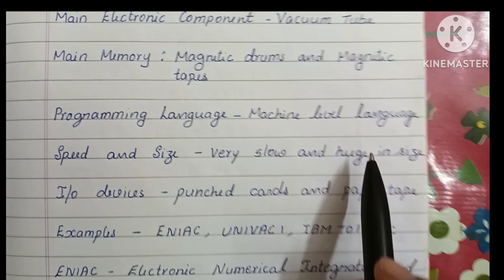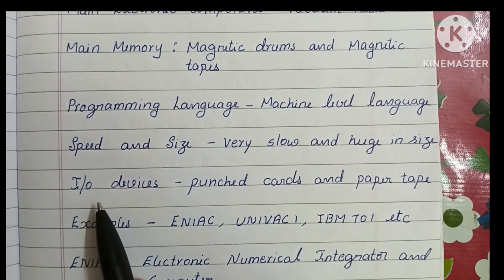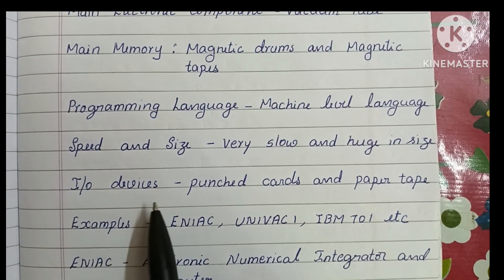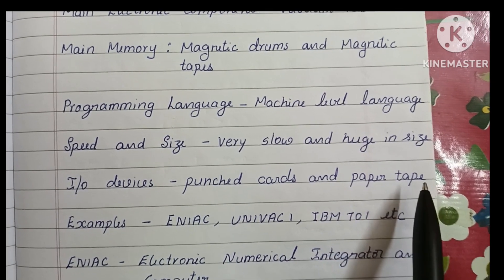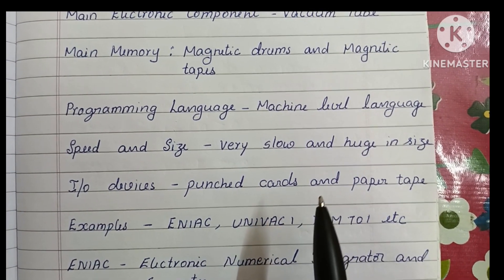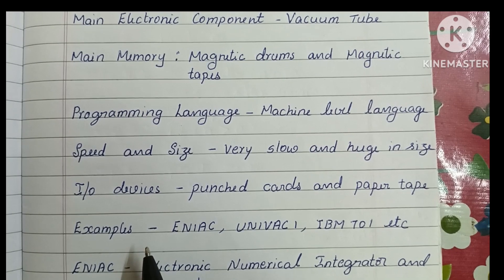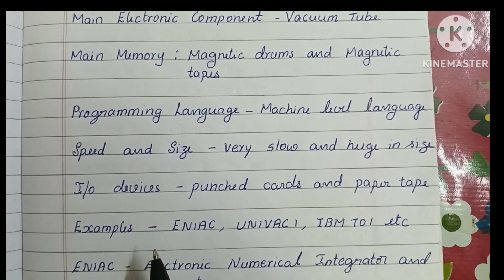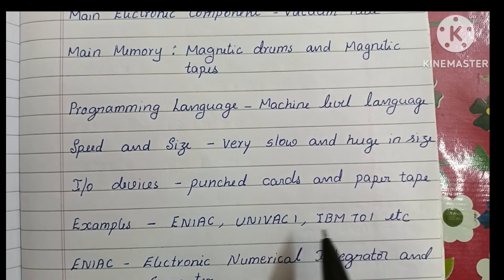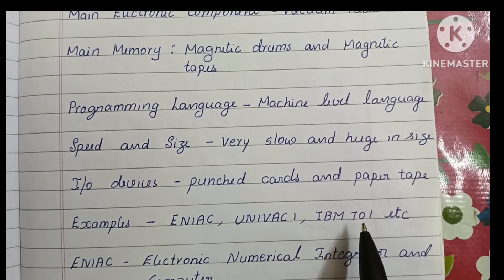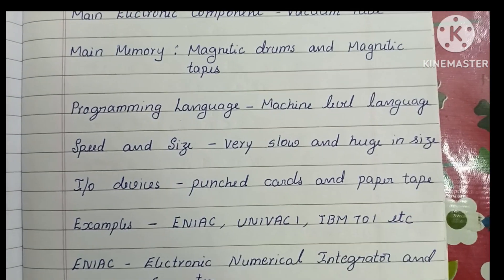The size is huge. Punched cards and paper tapes are used as input and output devices. Examples of first generation computers are ENIAC, UNIVAC, and IBM 701.